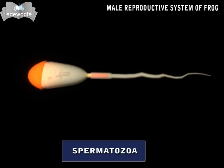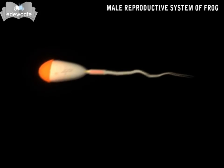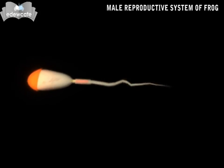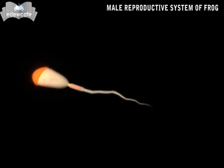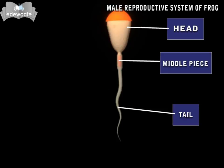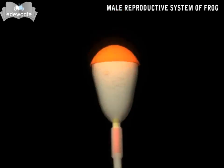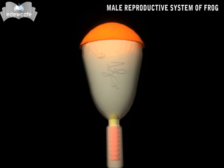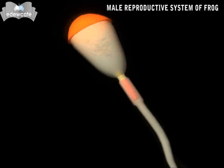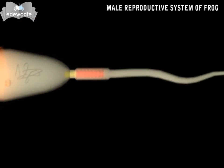The spermatozoa are microscopic. Each spermatozoon consists of a head, middle piece, and a tail. The head has a nucleus, and the thread-like tail helps in swimming. The middle piece connects the head and tail.